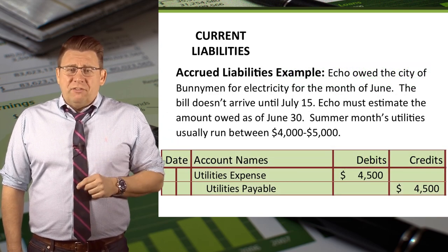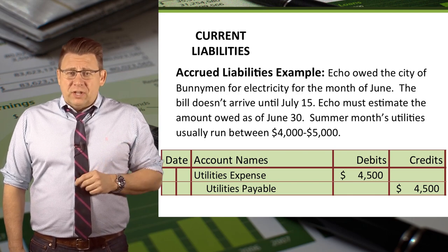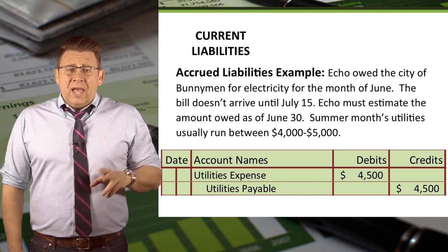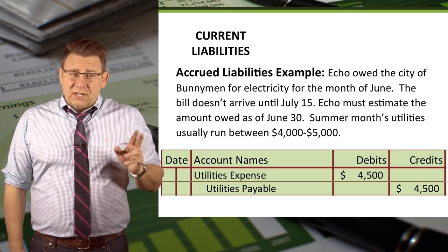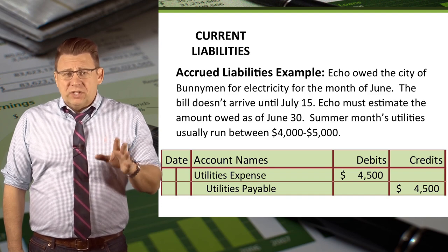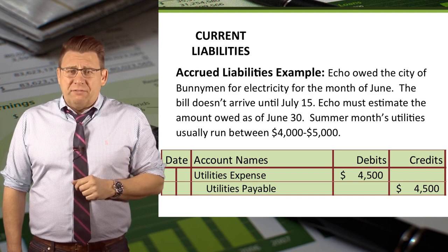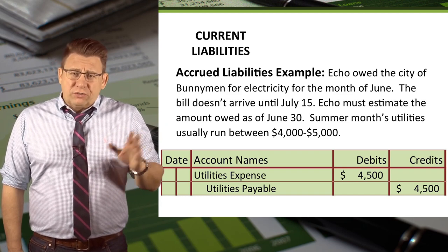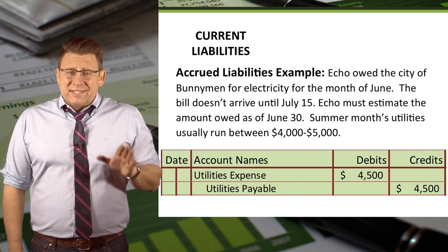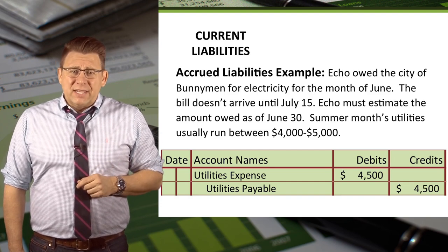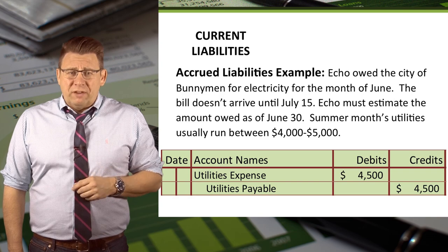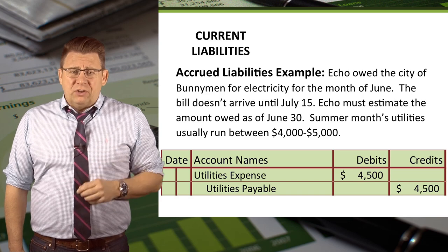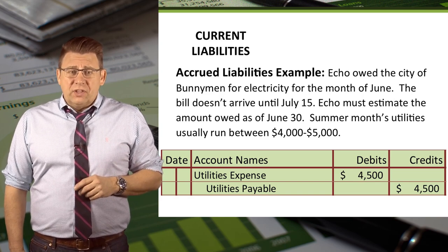Echo owed the city of Bunnymen for electricity for the month of June. The bill doesn't arrive until July 15th, so Echo must estimate the amount owed as of June 30th. Summer month's utilities usually run between $4,000 and $5,000, so the estimated amount is $4,500. The journal entry is a debit to utilities expense and a credit to utilities payable for $4,500. Estimating $4,500 of utilities expense provides better information to investors and creditors than reporting nothing.